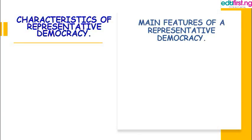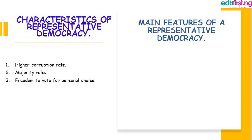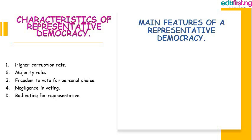Let's look at the characteristics of representative democracy. One: higher corruption rates. Two: majority rules in a representative democracy. Three: freedom to vote for personal choices. Four: negligence in voting. Five: bad voting for representatives. And the last one: people's rights as power to vote.